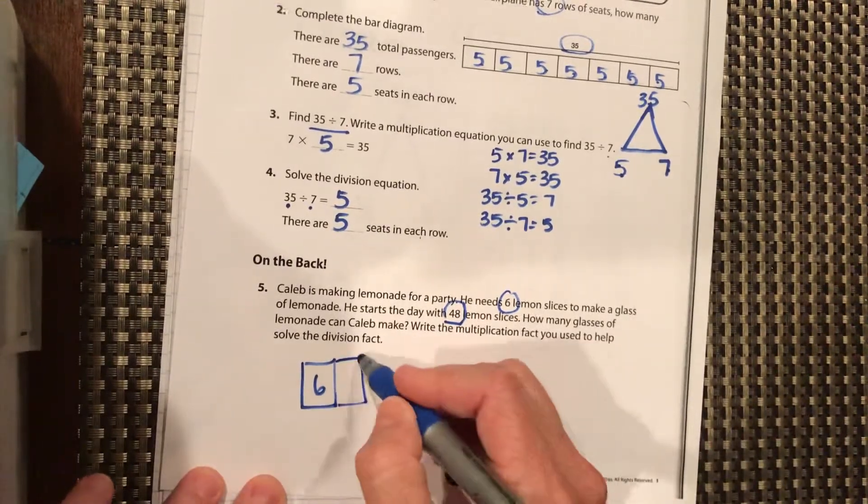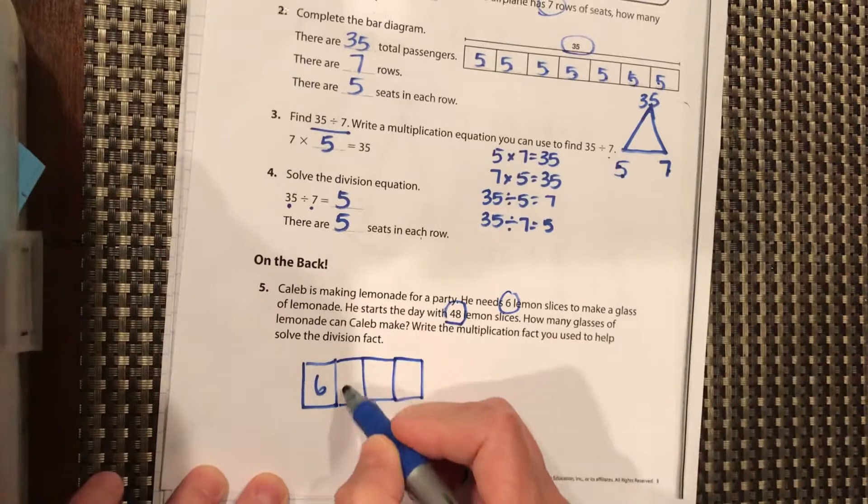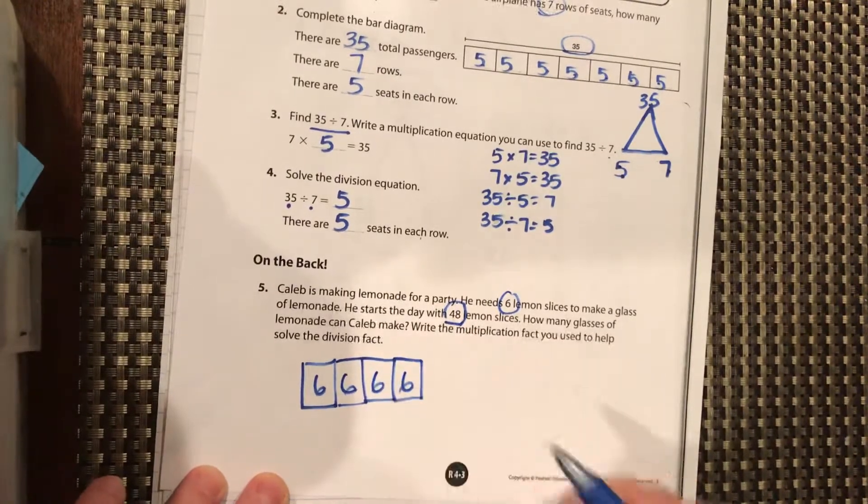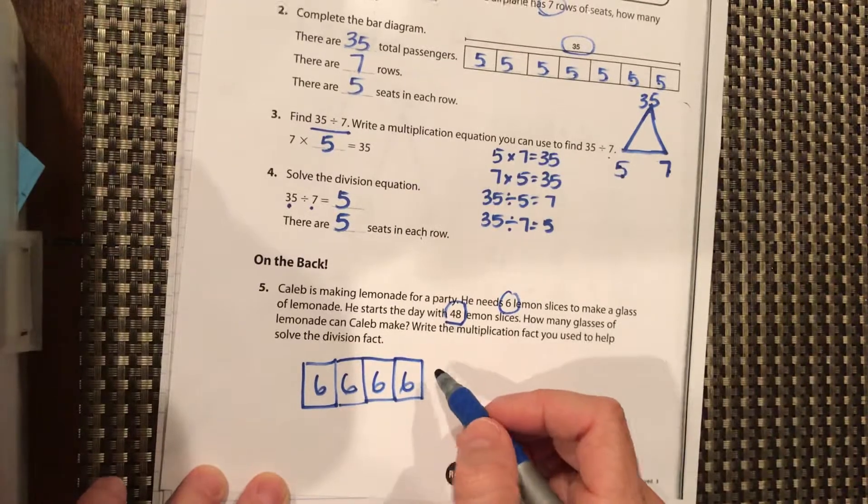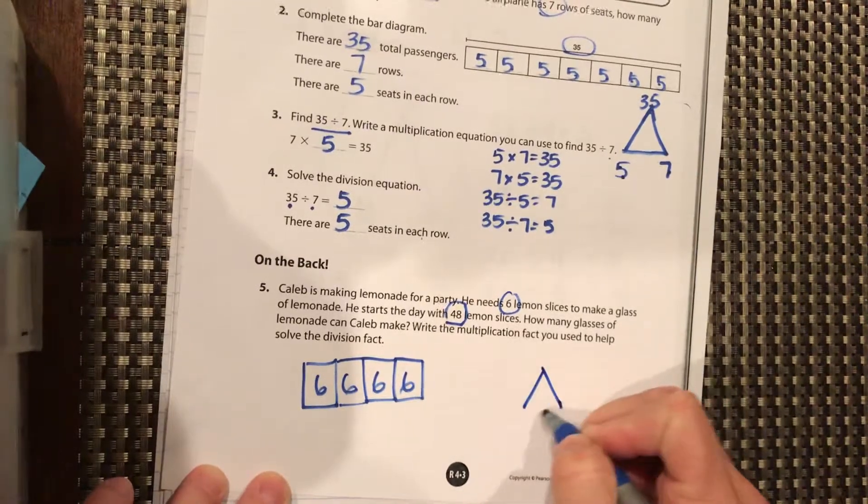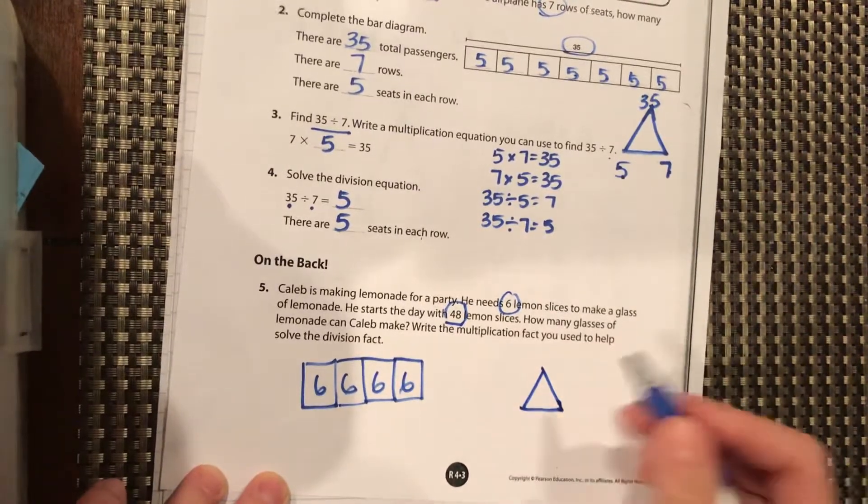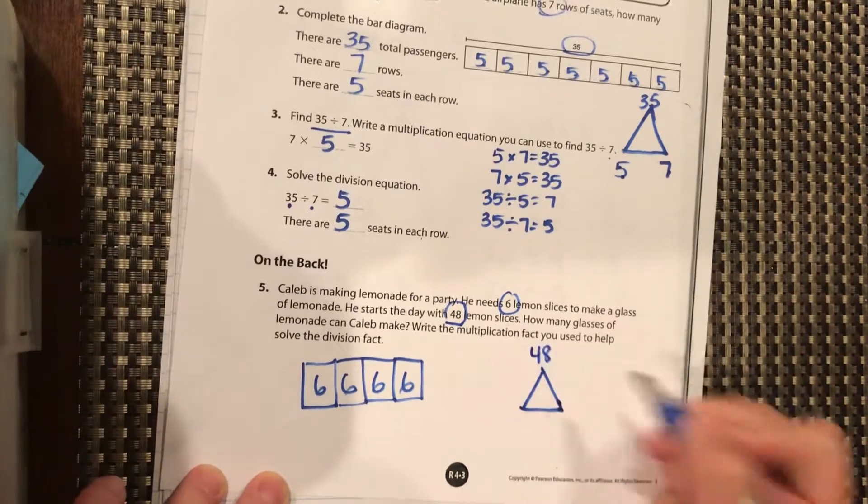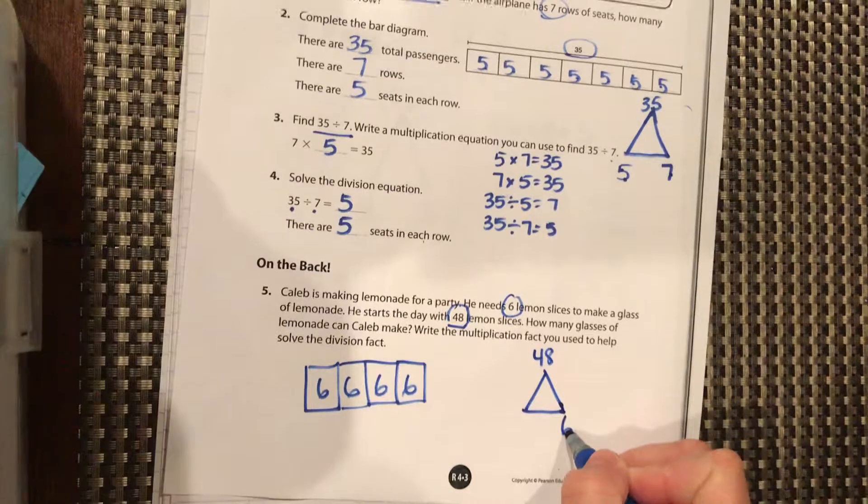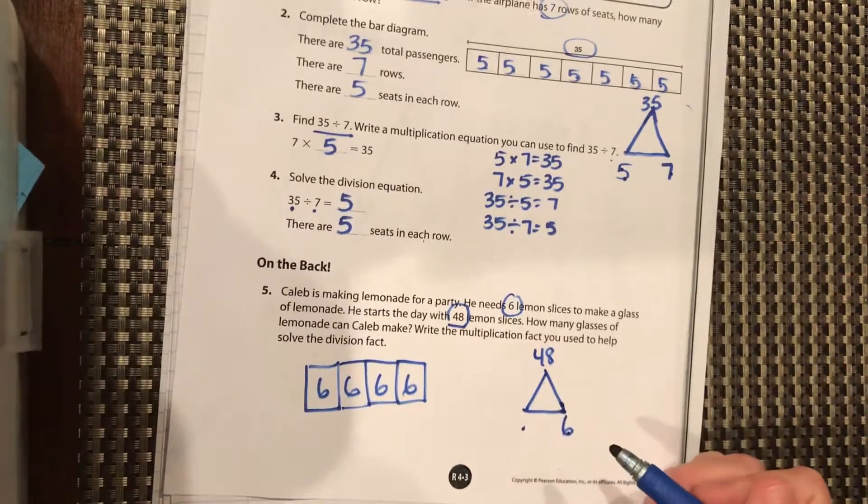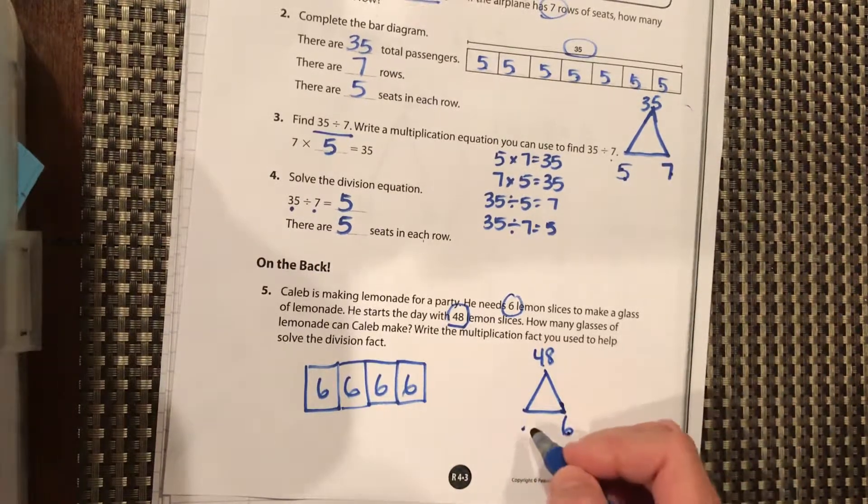How many glasses of lemonade can he make? Well, we don't know how many glasses. We know that each one is going to have 6 in it. So we can just keep putting 6 in there until we get to 48. Or we can make our fact family triangle, our largest number 48 being on the top. 6 is going to be one of the factors. We ask ourselves, 6 times what equals 48? And we know that that's 8.